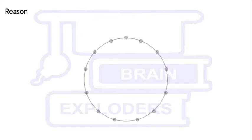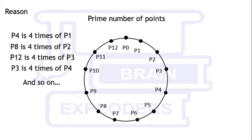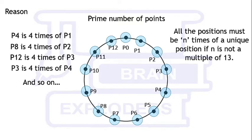The reason behind all these is that 13 is a prime number. When we find n times of all positions one by one, suppose 4 times of positions, then every next position is 4 steps away from the previous position. And since 13 is not a multiple of 4, that's why it cannot be divided into groups of 4. This doesn't allow any repetition.